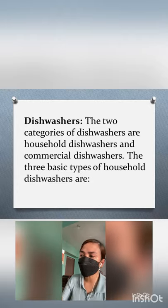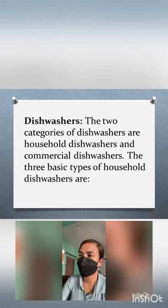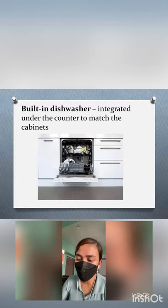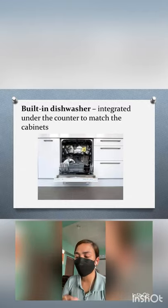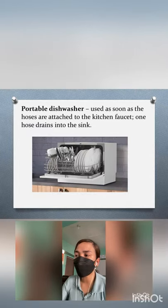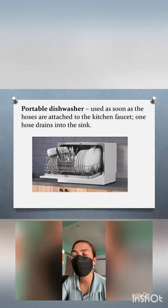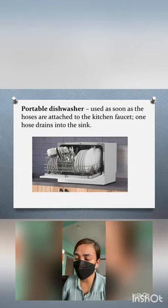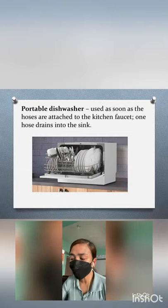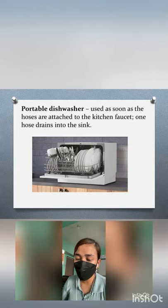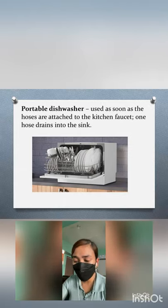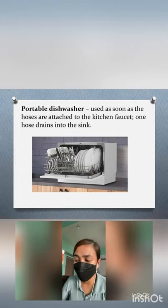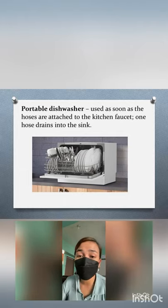There are three basic types of household dishwashers. First, the built-in dishwasher, integrated under the counter and designed to match the cabinets. Next, the portable dishwasher — a regular dishwasher you can move around when needed. You roll it to a sink, plug it in, hook it up to a faucet, and start the cycle. It draws clean water as necessary and pumps dirty water into the sink.